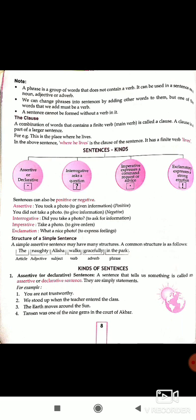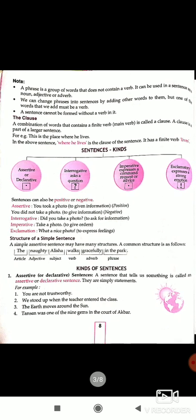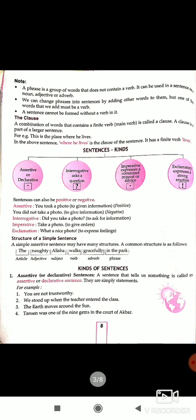Sentences can also be positive or negative. Assertive: 'You took a photo' — gives information in a positive way. Negative: 'You did not take a photo.' Interrogative: 'Did you take a photo?' — asking for information. Imperative: 'Take a photo' — giving an order. Exclamative: 'What a nice photo!' — when we see something and express our feelings, we say 'Wow, what a nice photo!'